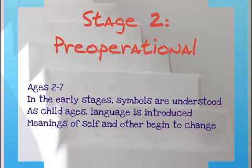Stage two is the pre-operational stage, occurring between the ages of two and seven. In the early stages here, symbols begin to be understood. Remember that language is a symbol for thought, so we start to understand what is meant when words are used. As the child ages through this pre-operational stage, language is introduced and meanings of self and other begin to change. Towards the end of this stage, the child starts to understand they're not necessarily the center of the universe and that other people are also fully developed beings just like they are.